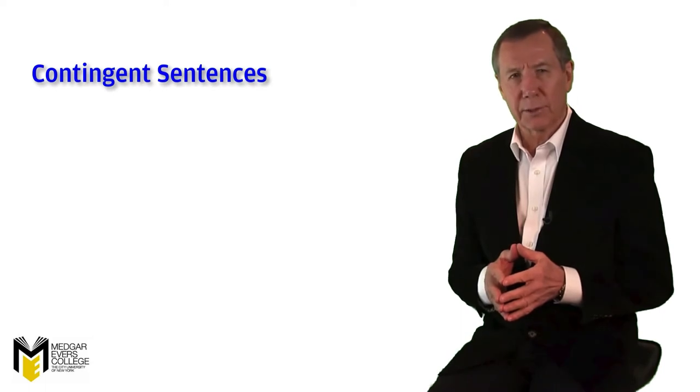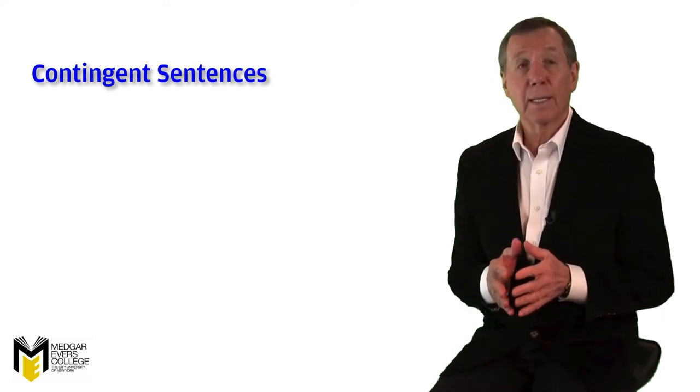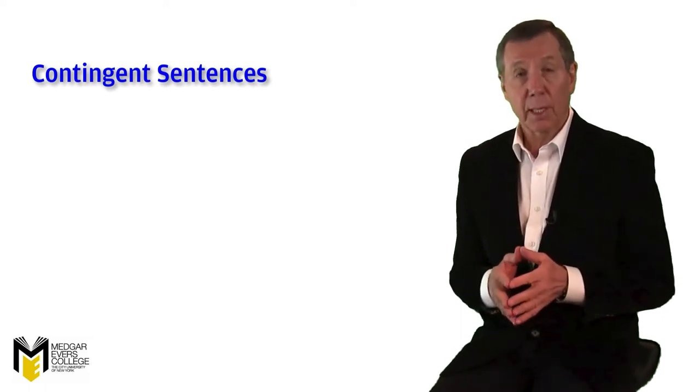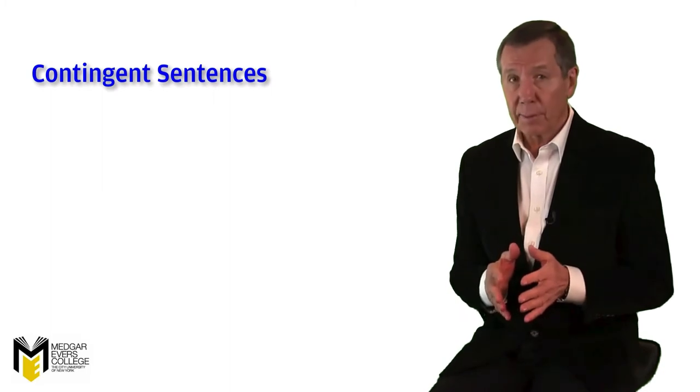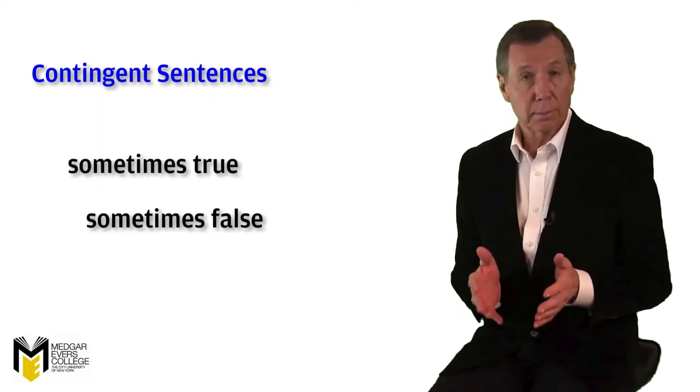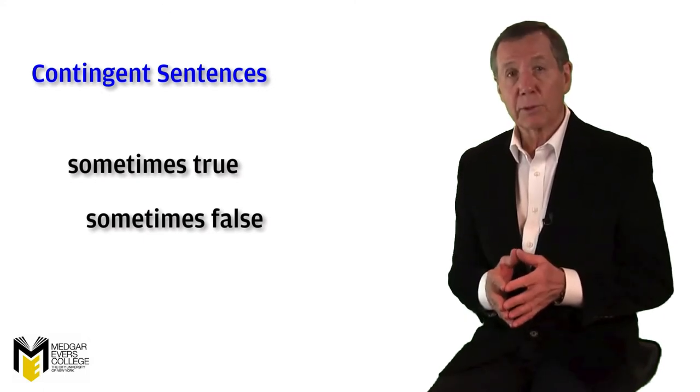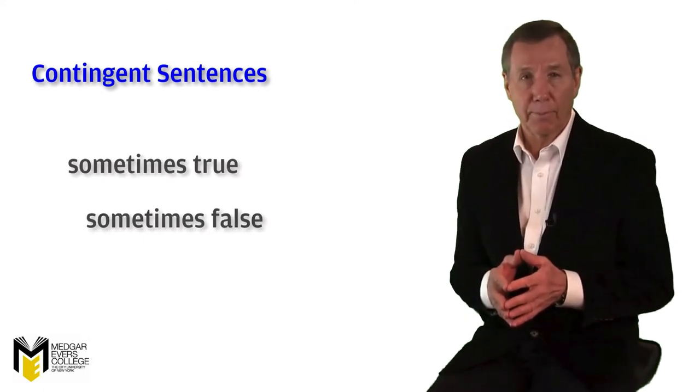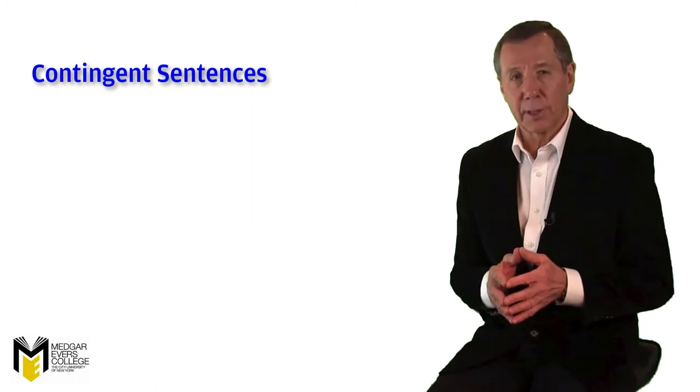Nearly all of the sentences that we encounter in arguments are contingent propositions. That is, they vary in value depending on the circumstances surrounding them. Sometimes they're true, and sometimes they're false, which we can express in a truth table. Here's our initial sentence.